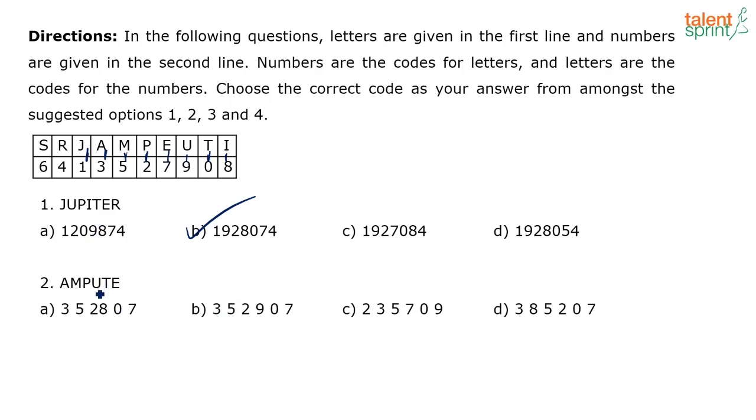Then you have ampute, U. U is 9. T is 0 and then you have E is 7. So, 3, 5, 2, 9, 0, 7. This is your answer. Second one, answer is B.